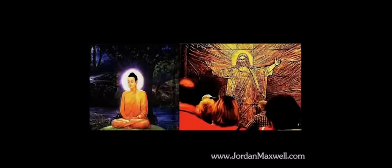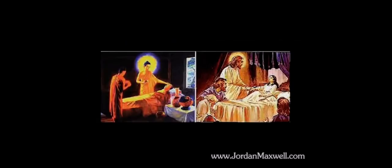We know that Buddha, like Jesus, was also pictured as a sun God. Buddha, the wise Buddha, is pictured with the halo of the sun around him, as is Jesus on the right with the halo of the sun around him. On the left, Buddha is attending to a sick person in bed, and on the right, Jesus — being God's Son — is also attending to a sick person in bed. The ideas are the same.